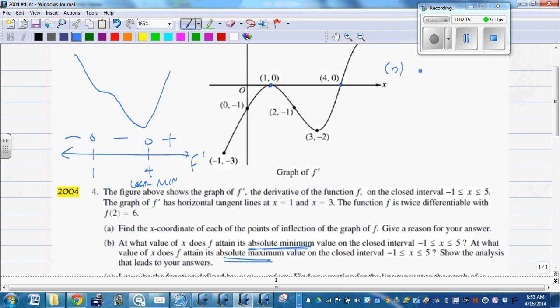So for part B, there is an absolute minimum at X equals four because F decreases from negative one to four and increases from four to five. All right, so there's our two points for the absolute minimum. We know what it is, and we explain why.